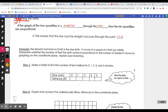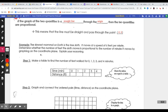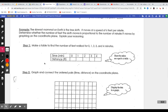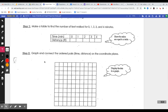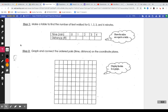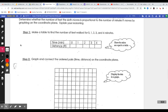Alright, so let's go right to an example here. The example says, The slowest mammal on earth is the tree sloth. It moves at a speed of six feet per minute. Determine whether the number of feet the sloth moves is proportional to the number of minutes. Okay, so first we're going to make a table.